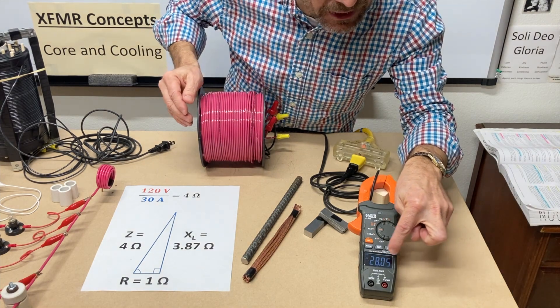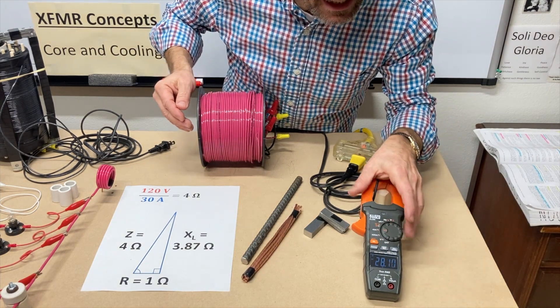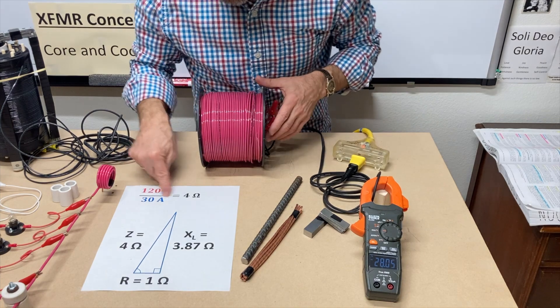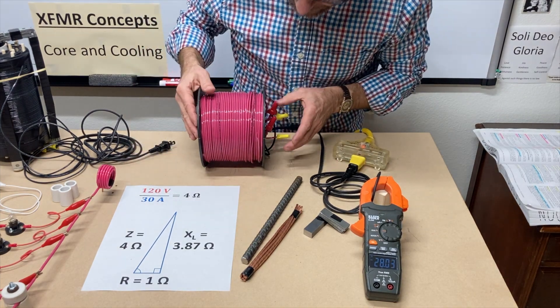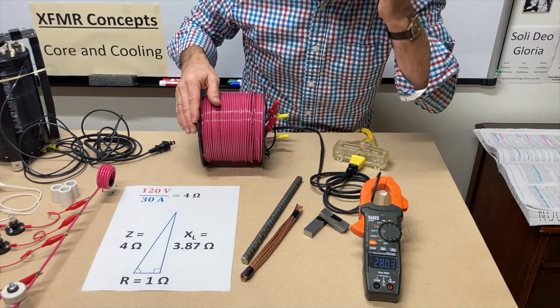And here we have a little over 28 amps flowing. Well, that's close enough for what we're going to demonstrate today. Might be some voltage drop in the building right now.